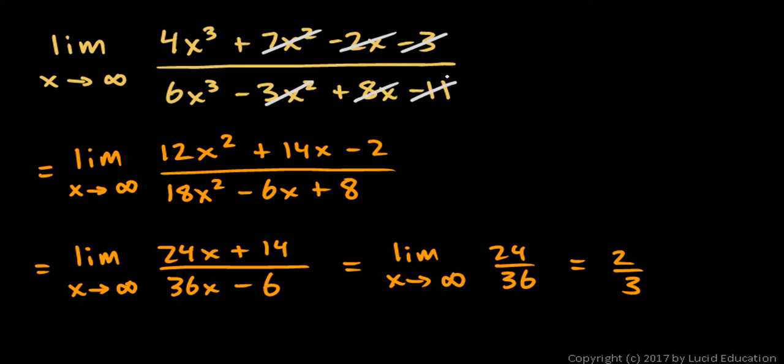So as X approaches infinity, this will approximately equal 4x cubed over 6x cubed. And the X cubes cancel, and we're left with 4 over 6, which reduces to 2 over 3. So the same answer we get with L'Hopital's rule. But the simpler and faster approach would certainly be preferred, especially if you're taking a timed test.